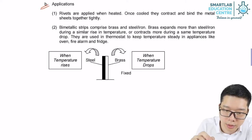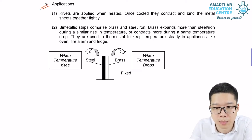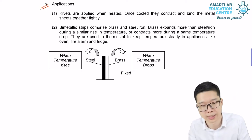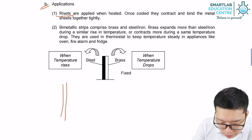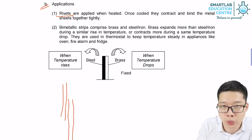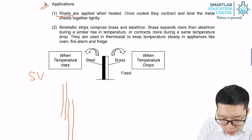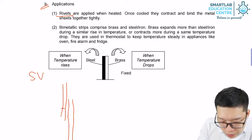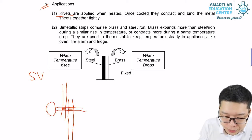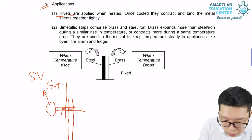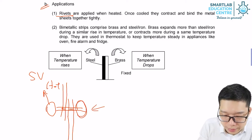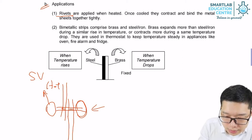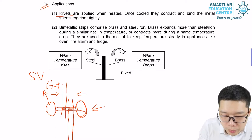The next two applications show how we use the property of expansion and contraction to work for us. The first one is the rivet, which is used for mounting two iron plates together. We draw holes on the two plates, and the rivet looks like a large nail. When the rivet is still hot, we insert it and mount the other side using a hammer. When the rivet cools down, it contracts and holds the two plates tightly together.